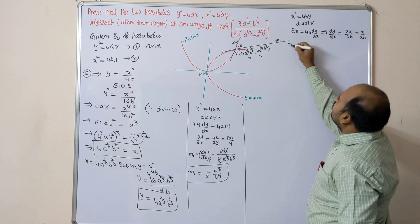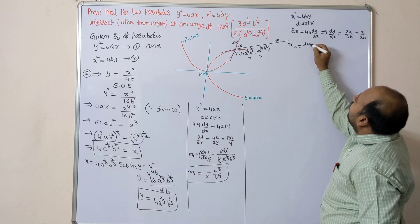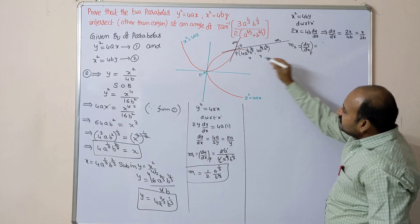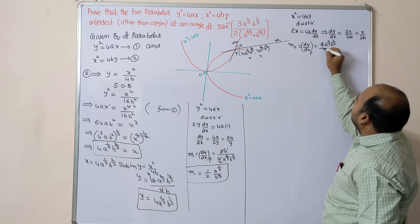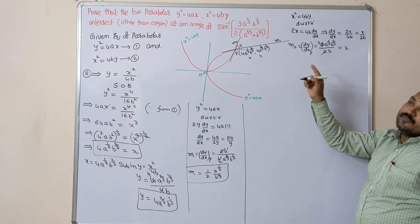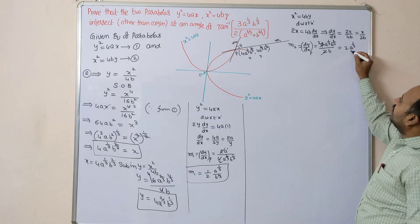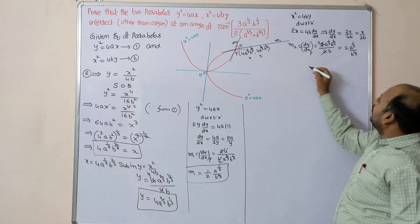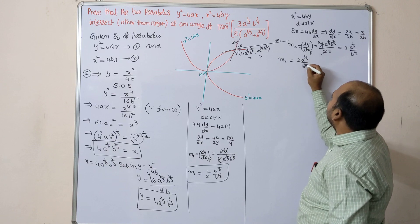At point P, substituting x = 4a^(1/3)·b^(2/3) into dy/dx = x/(2b): m2 = 4a^(1/3)·b^(2/3) / (2b) = 2a^(1/3)·b^(2/3 − 1) = 2a^(1/3)/b^(1/3). So m2 = 2a^(1/3)/b^(1/3).